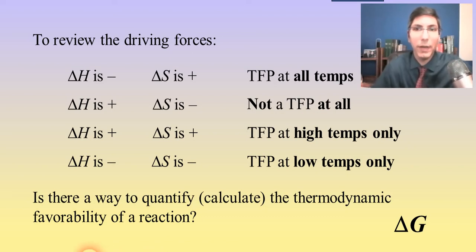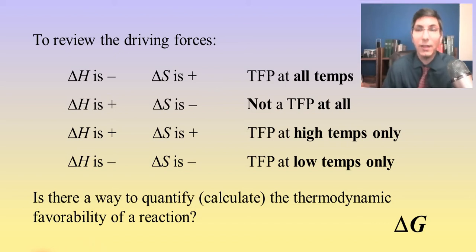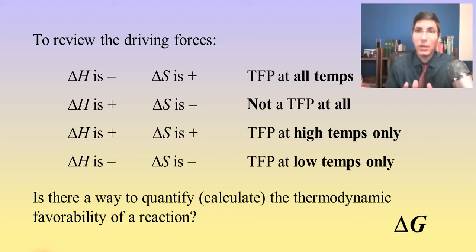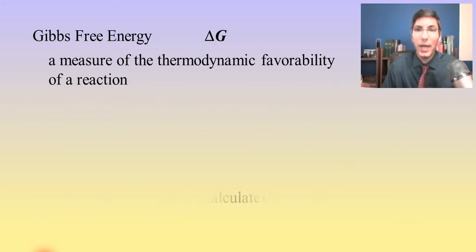Hi there, I'm Jeremy Krug and welcome back to general chemistry AP chemistry videos. If you are getting tired of listening to me drone on about thermodynamics, you can be glad because this is the last in the series of thermodynamics videos. In the last video we learned about delta S and delta H and how to determine at what temperatures a reaction will be thermodynamically favored. We also said that there's this other quantity called delta G, or Gibbs free energy.